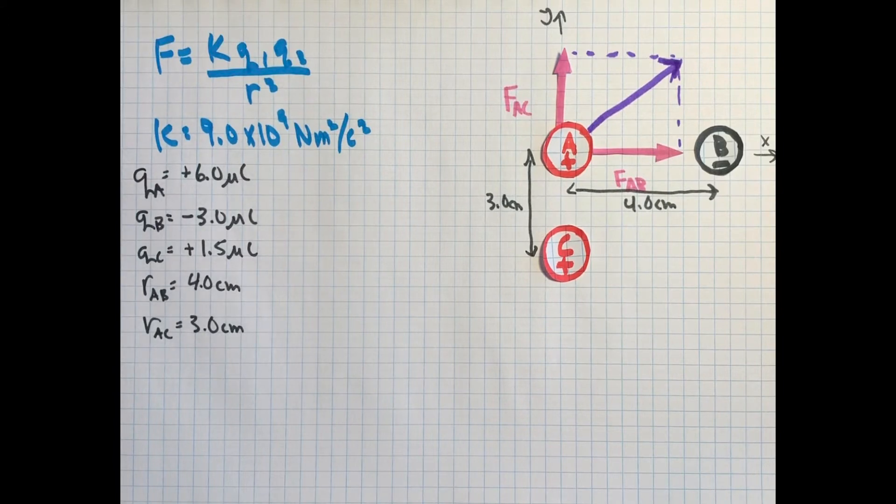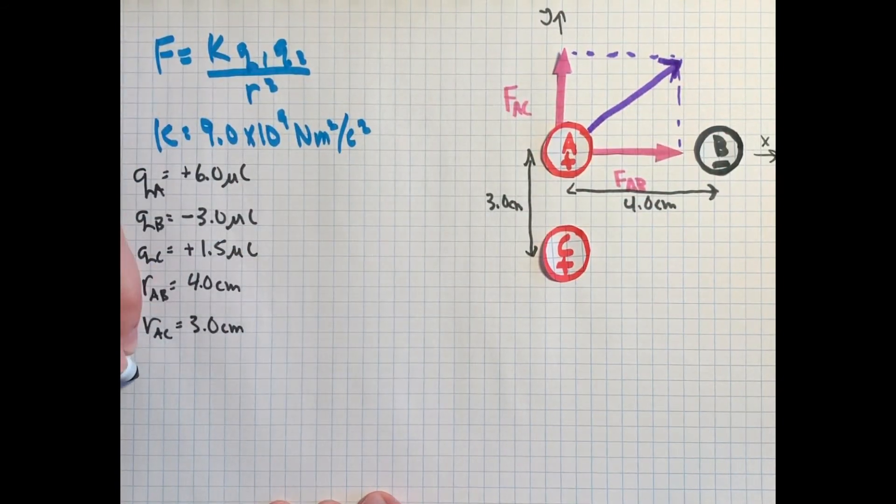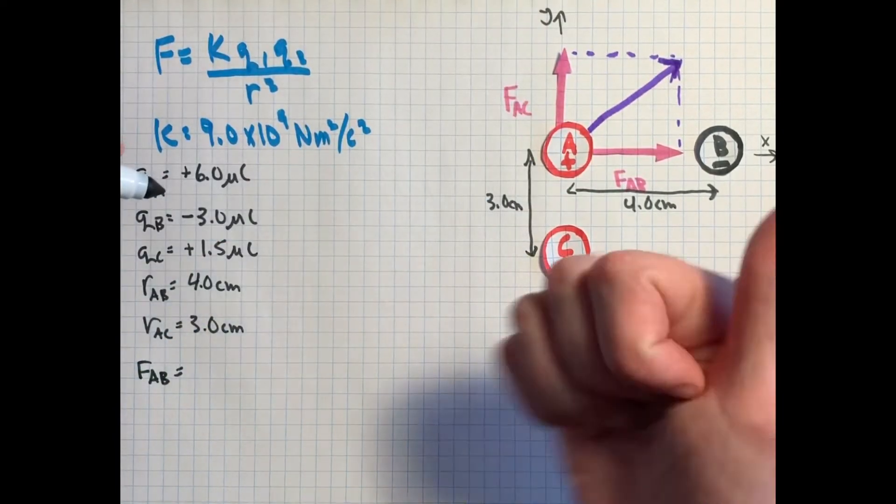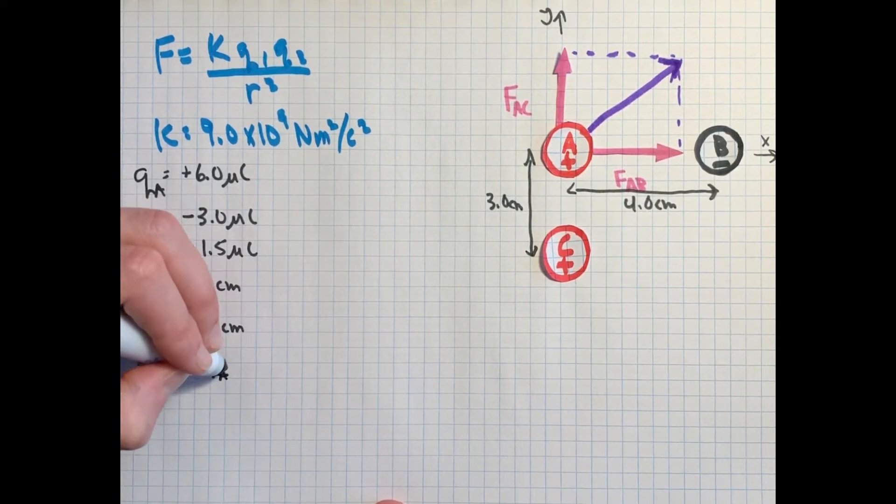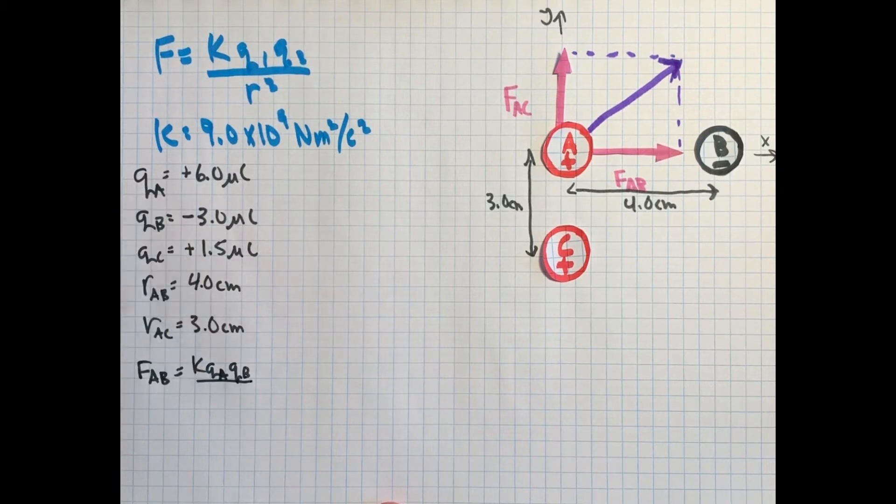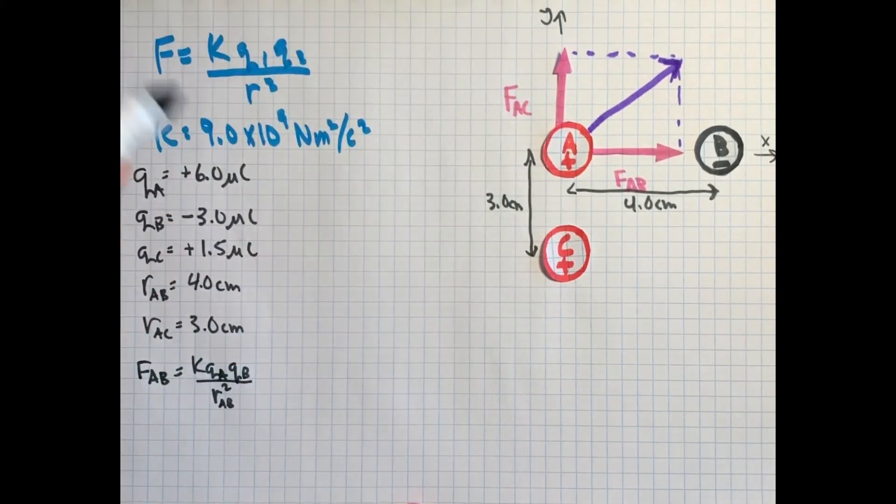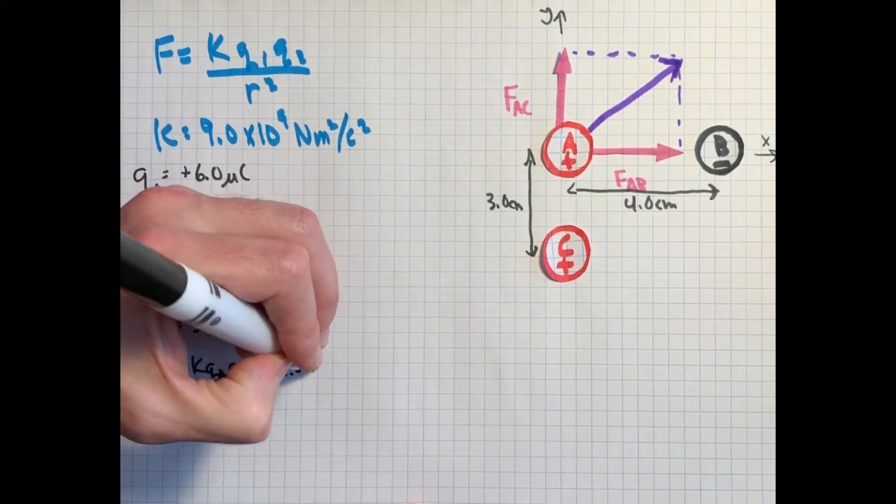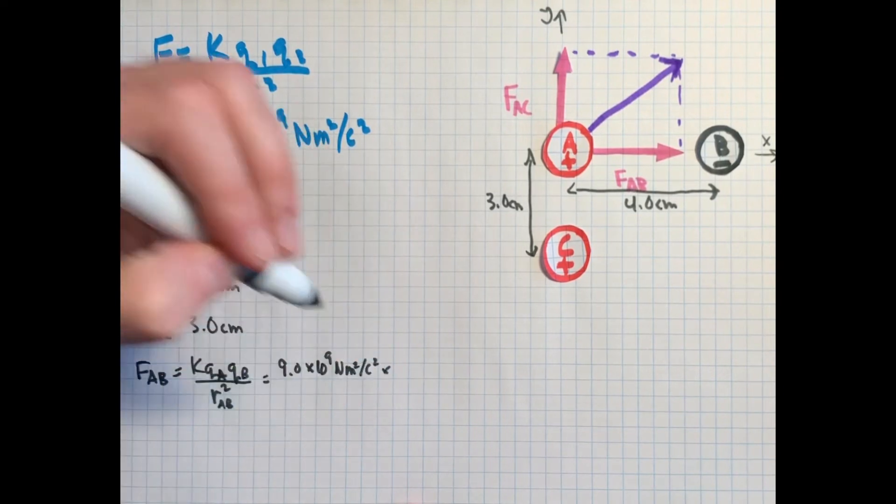So let's solve for A and B here. So FAB will be, we're finding this arrow here, this force in this direction. So FAB is K, qA, qB, and again, the order does not matter of those two things. I'm doing it because A, or B follows A, so why not A first? All over r squared for the distance between them. So note that C we're completely ignoring for now. 9.0 times 10 to the 9 newton meter squared per coulomb squared times... oh, wait, we have a problem. Can I use plus 6 microcoulombs? No, I cannot.